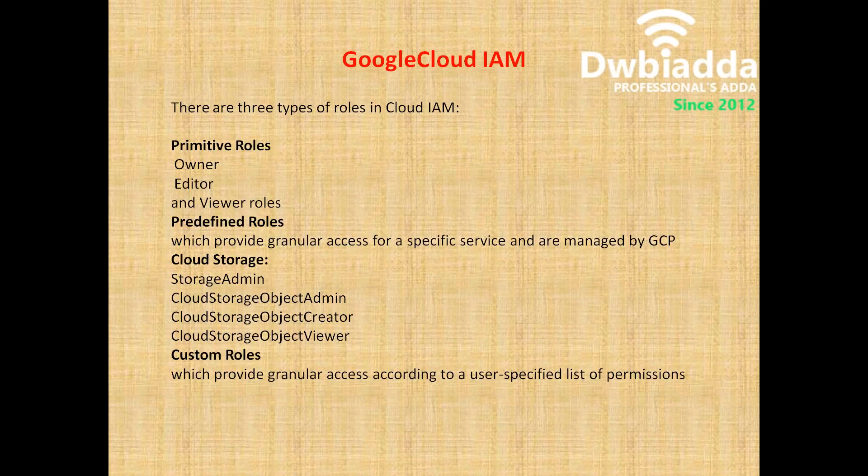The second type is Pre-defined roles, which provides granular access for a specific service and are managed by the Google Cloud Platform. For example, for a Cloud Storage bucket, you can assign roles like Storage Admin, Cloud Storage Object Admin, Cloud Storage Object Creator, and Cloud Storage Object Viewer. These are specific access roles assigned by the Google Cloud Platform, which is why they are called Pre-defined roles.